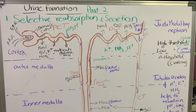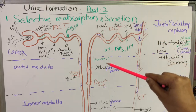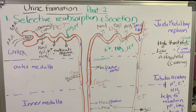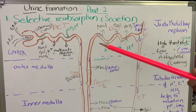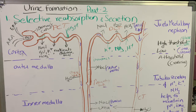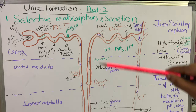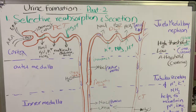The reabsorption of 85% of primary urine occurs in the proximal convoluted tubule and the descending limb of Henle's loop. The reabsorption that occurs in the PCT and descending limb of Henle is known as mandatory or obligatory reabsorption, because it is compulsory reabsorption.